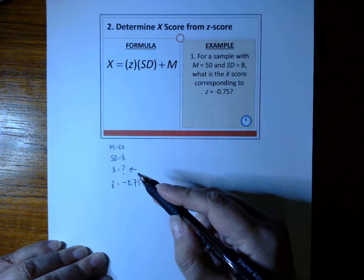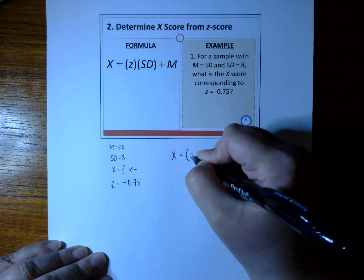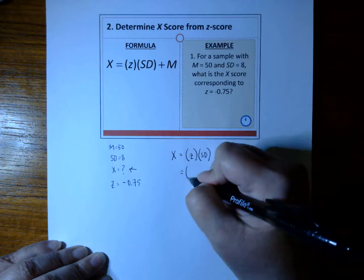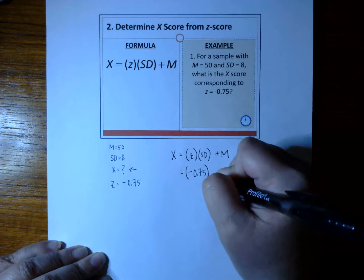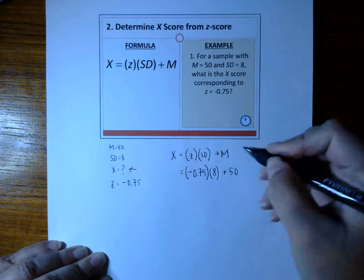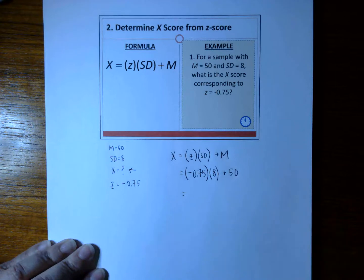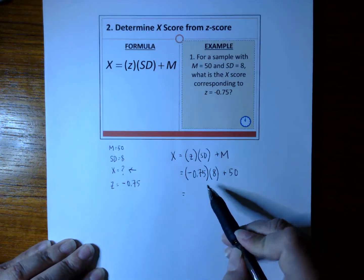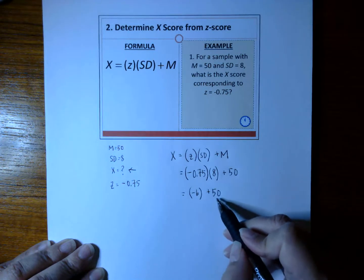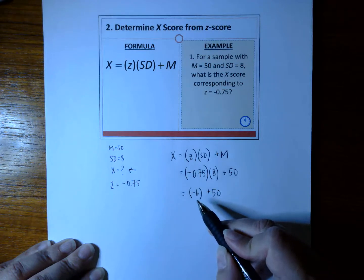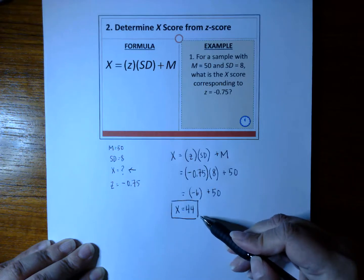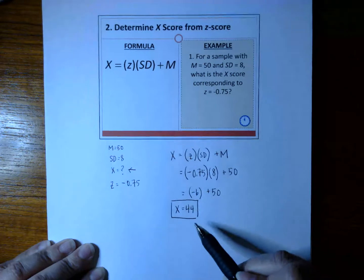Let's use this formula: X equals Z times SD plus M. At this point, we're just going to plug in our information. We have a Z of a negative 0.75. Don't forget about that negative score. We have an SD of 8, and we have a mean of 50. A negative 0.75 times 8 gives us a negative 6 plus 50. The number one mistake is students want to add 50 plus 6, but no, this is a negative score. We actually subtract the negative 6 from 50, and we get X equals 44. The X-score corresponding to a Z-score of negative 0.75 is X equals 44.